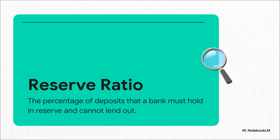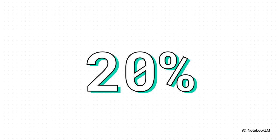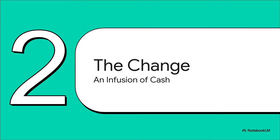Now for maybe the most important piece of this puzzle: the reserve ratio. This is a rule that tells banks what percentage of all their deposits they have to keep on hand — they are not allowed to lend this portion out. We can figure out the reserve ratio by dividing the bank's reserves (800) by total deposits (4,000), which gives us 0.2, or 20%. So for every 100 units deposited, the bank keeps 20 locked away. Our baseline is set — a stable economy with a 20% reserve ratio.